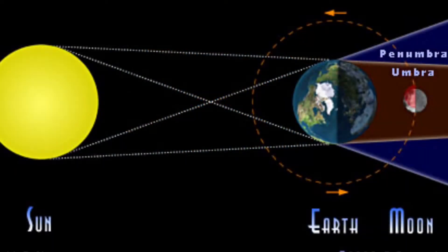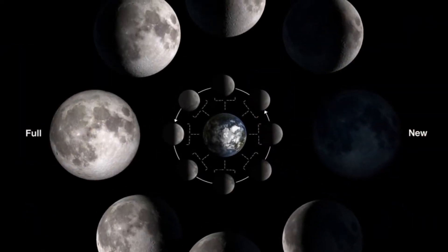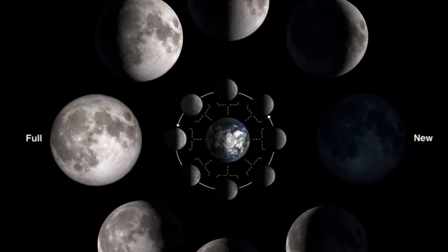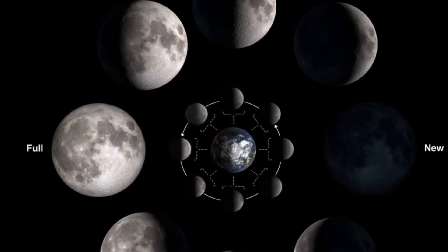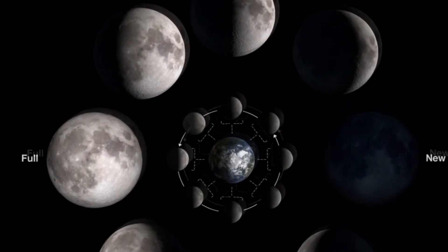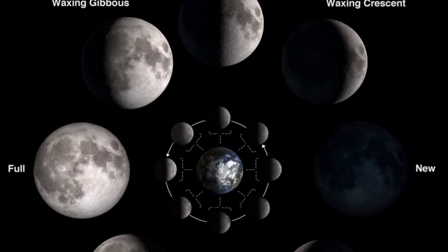The next moon phase is the full moon. This is when the earth is in between the sun and the moon. After the full moon comes the waning gibbous, the third quarter moon, and the waning crescent.